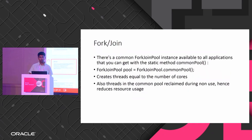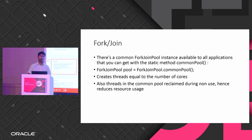To create a ForkJoinPool, you can use the common pool — a static method that creates threads equal to the number of cores. Another advantage is that it recommissions threads after they complete execution — threads are added back to the pool and can be reused, reducing resource usage.